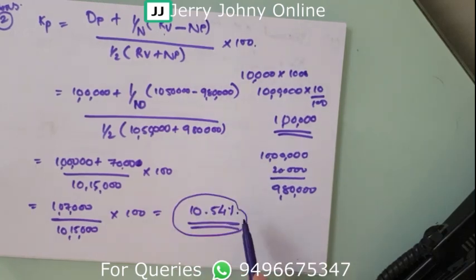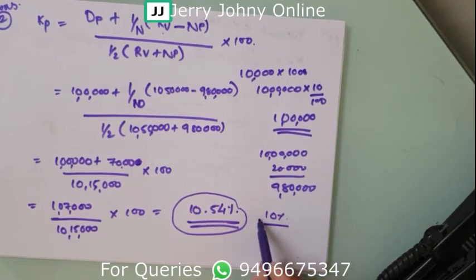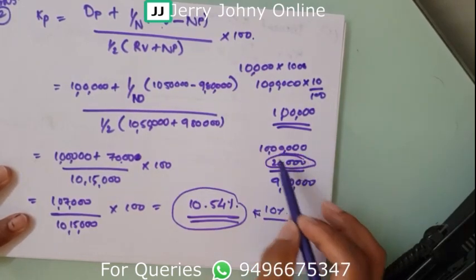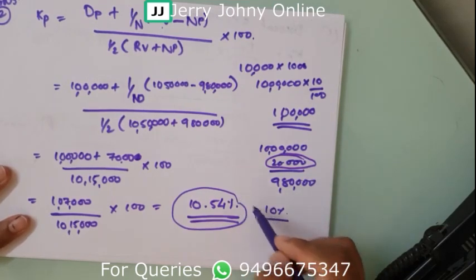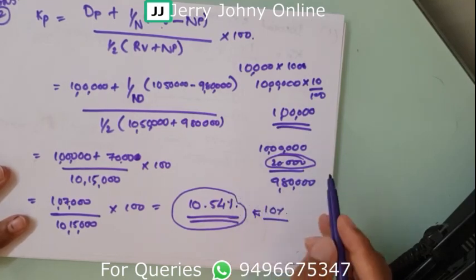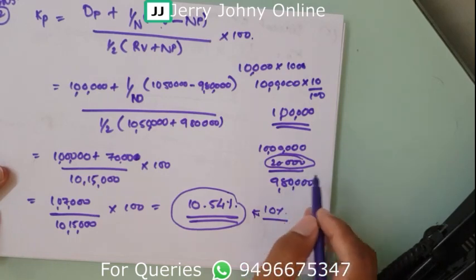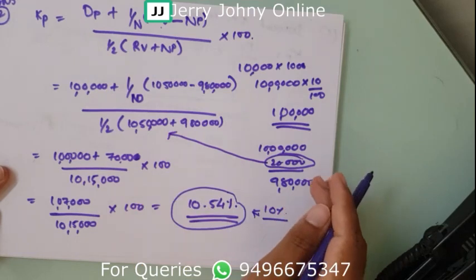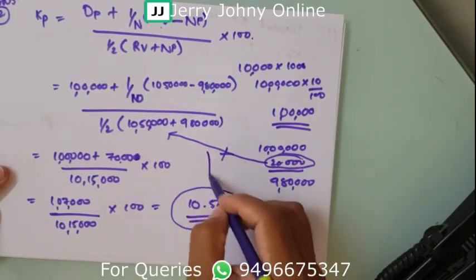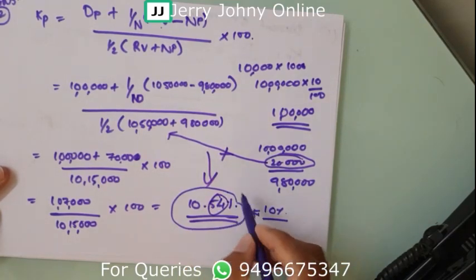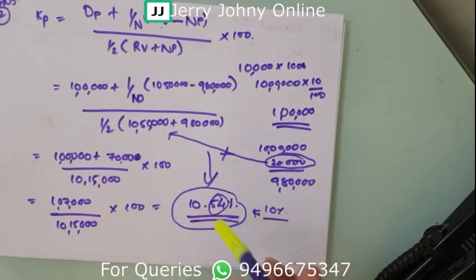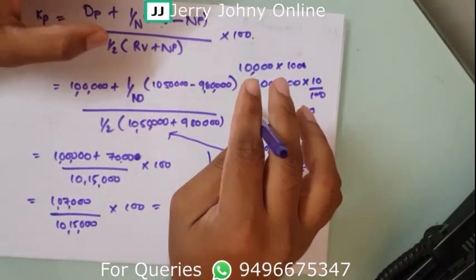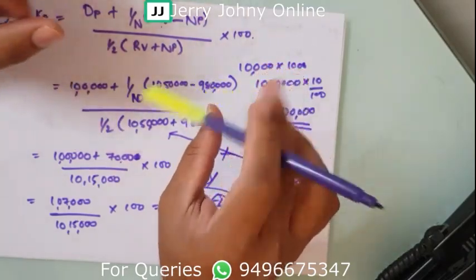The cost has increased to 10.54% — above the nominal 10% — because of the flotation cost of ₹2 per share plus the ₹50,000 redemption premium. Both together lead to the increase of 0.54%. This is the cost of preference share capital. It is similar to debt, only with dividends replacing interest. Thank you.